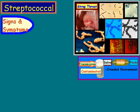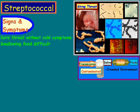Let's take a look at signs and symptoms. First off, there's a sore throat but it doesn't have any of the cold symptoms — no cough, no sneezing. Another symptom is that swallowing food or anything can be difficult due to pain. Then there's a fever that's typically over 101 degrees Fahrenheit. If it's under that temperature, it could possibly be the result of a viral infection.